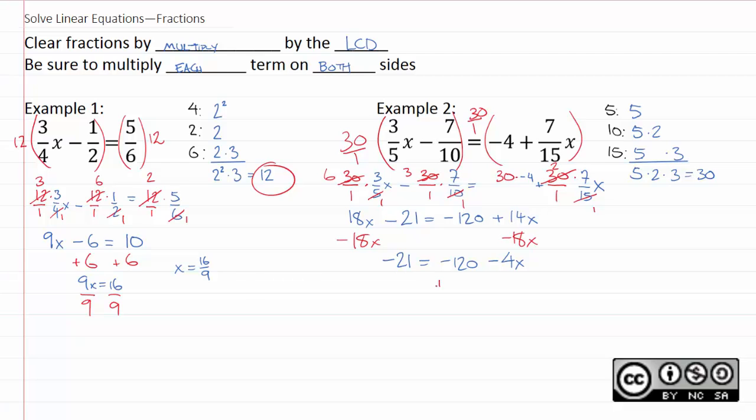Then I can handle this by adding one twenty to both sides. One twenty minus twenty one is ninety nine. Therefore, ninety nine equals negative four x. Again, we finish this off by dividing by negative four. And we get that x equals negative ninety nine over four.